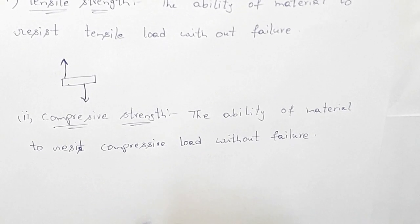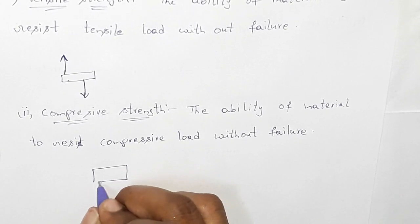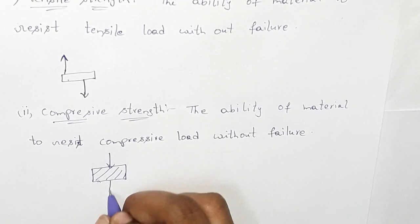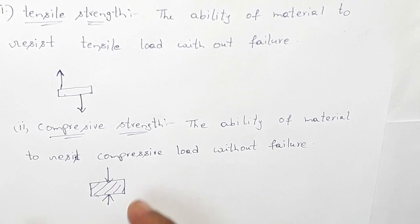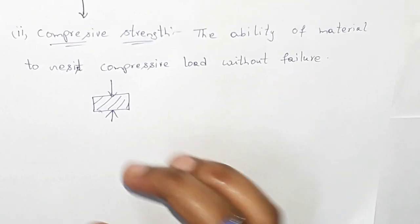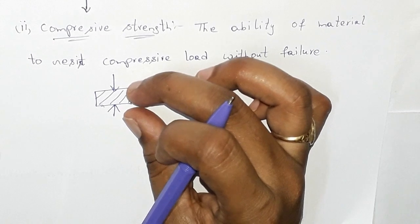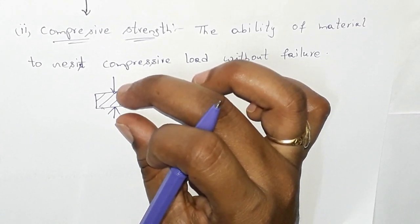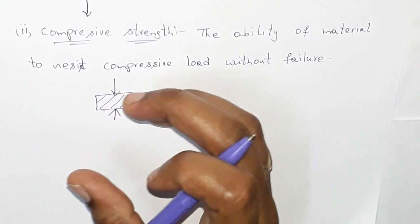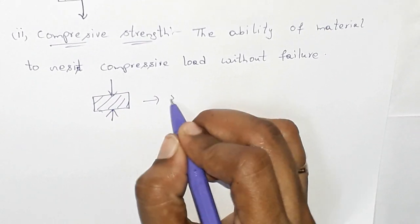The load acts in the same direction — for example, this component will act in the same direction. For a metal bar under compressive load, the diameter decreases and the length increases.